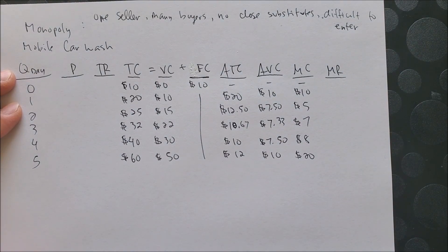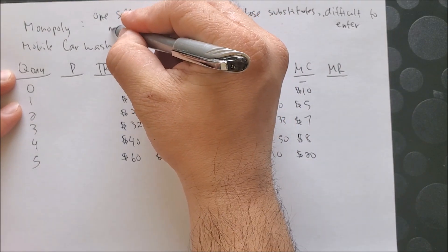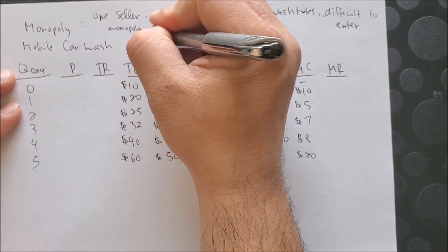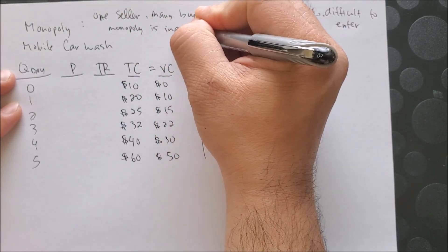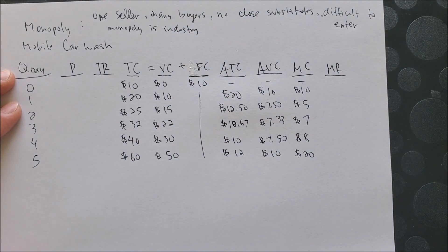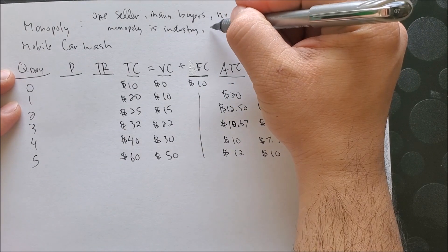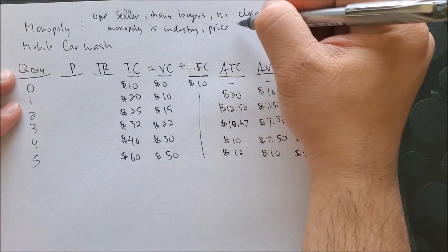Now, we also know that a monopoly is the entire industry. So monopoly itself is the industry. Hence, they have a lot of influence in setting the price, which makes a monopolist a price setter.